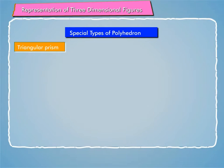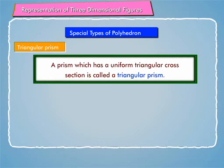Triangular prism: A prism which has a uniform triangular cross section is called a triangular prism. In the figure given on screen, triangular prism has six vertices A, B, C, D, E and F. Nine edges AB, BC, AC, AD, BE, CF, DE, EF and DF.